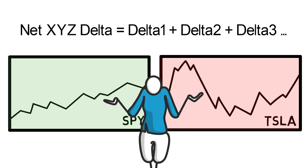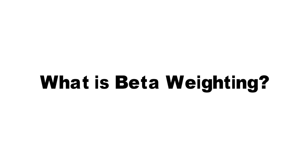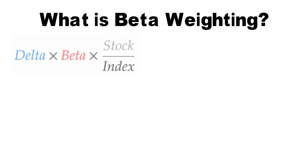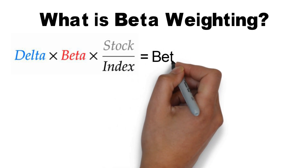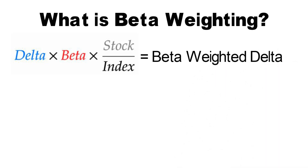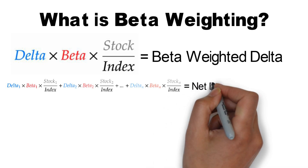To solve this problem, we must weigh each delta so that it accounts for the volatility of its underlying asset — this is where beta comes into play. Instead of adding up all the deltas of your positions, we first beta weight the deltas and then add them up. To beta weight a delta, we simply multiply it by the underlying beta value and by the underlying price divided by the benchmark price. Doing this for all your delta values and then adding them all up gives you a beta weighted delta value for your entire portfolio.